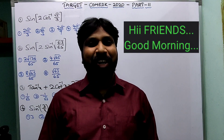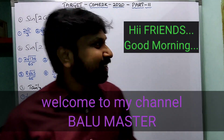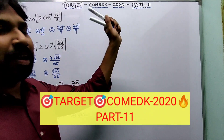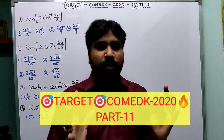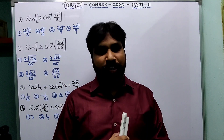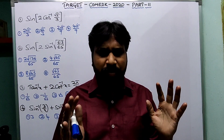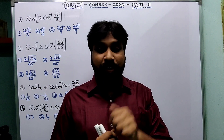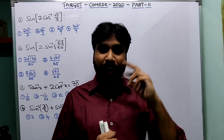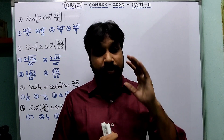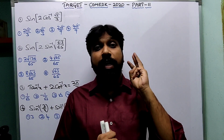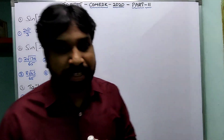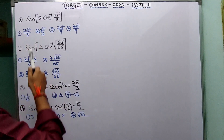Good morning, welcome to my channel Value Master. Today I'm going to discuss Target COMEDK 2020 Part 11. Today's topic is inverse trigonometric functions — a very easy and compulsory chapter with at least one question guaranteed. In the next session I'm going to discuss the trigonometry chapter, where they ask minimum three questions every year.